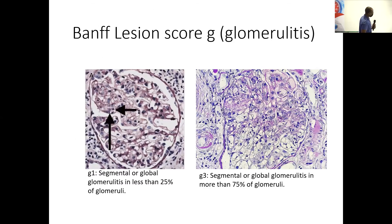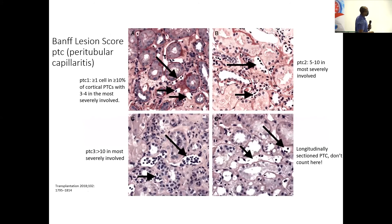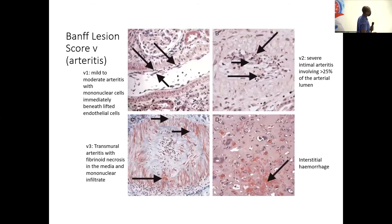These photomicrographs show what we mean by glomerulitis — the presence of inflammatory cells within the glomeruli, quantified based on the extent within the biopsy. The images also show peritubular capillitis: the capillaries present between the tubules, where you count the number of cells to determine the score — one, two, or three — depending on the number of involved vessels.